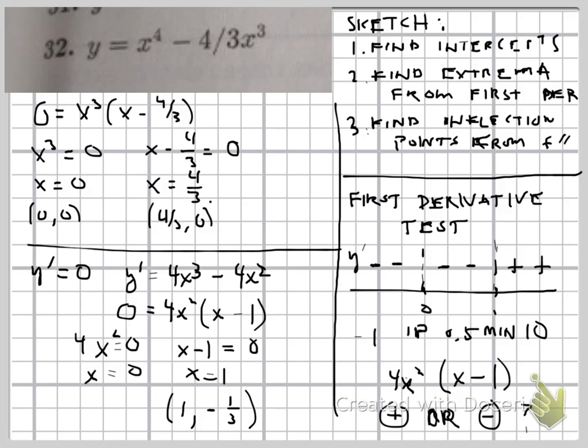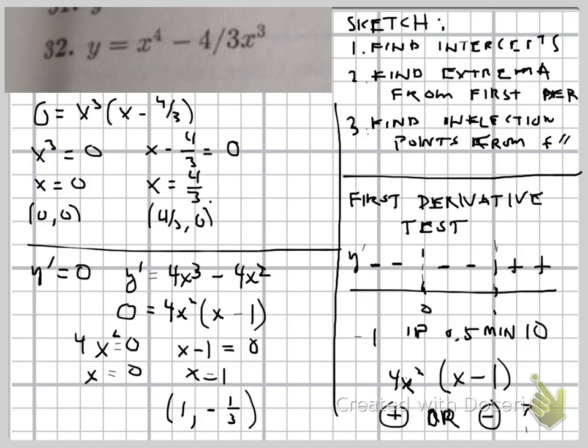So those are three points that we know. And finally, to verify that it's an inflection point, we'll say y double prime is. So we take the power rule of our first derivative. We get 12x squared minus 8x.